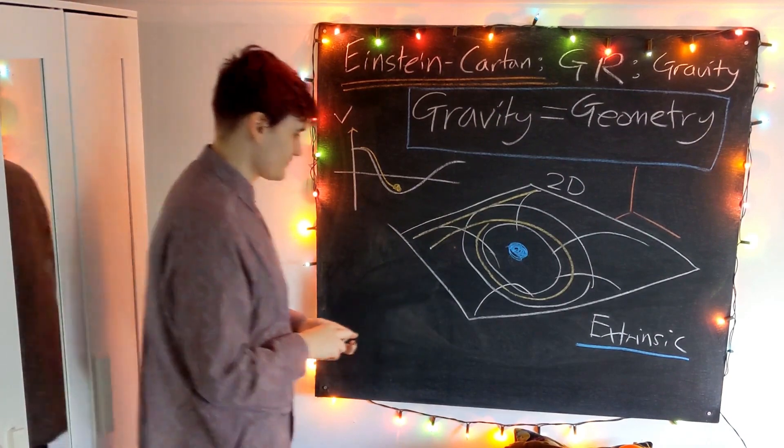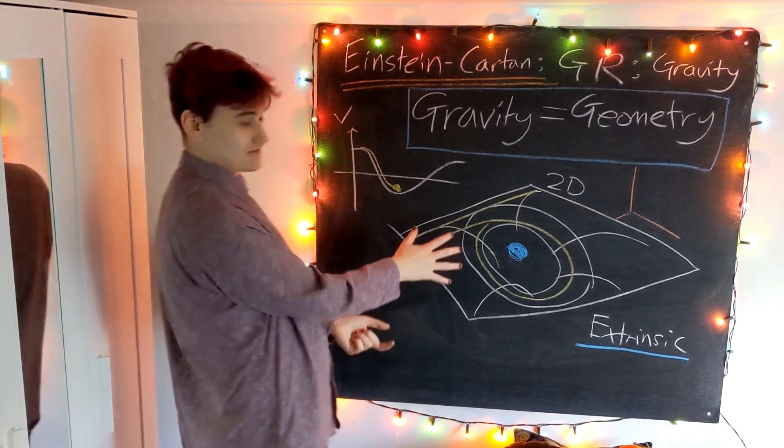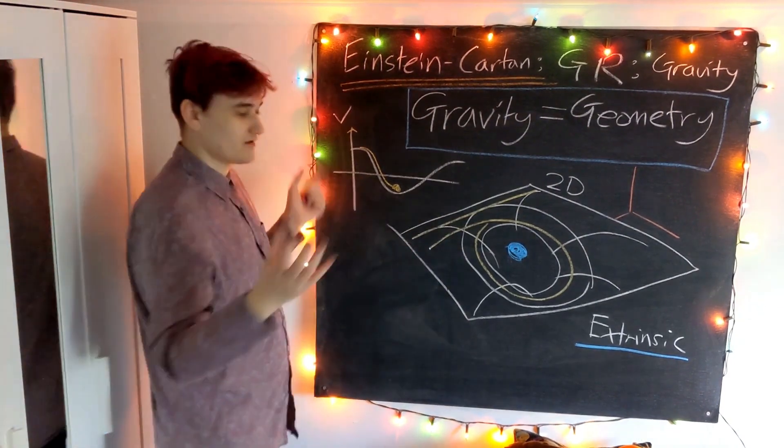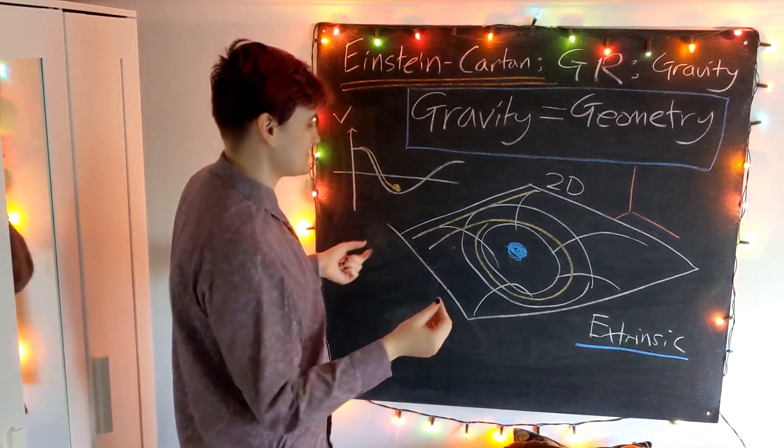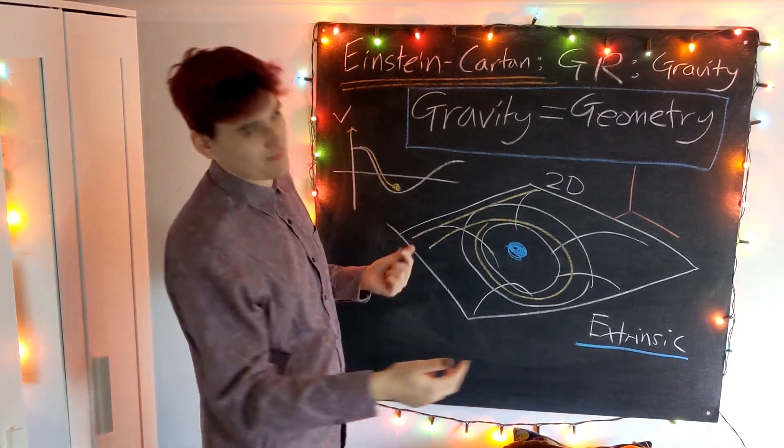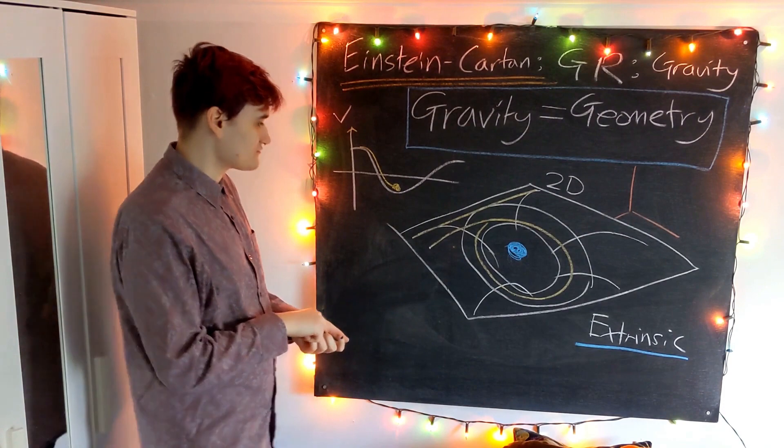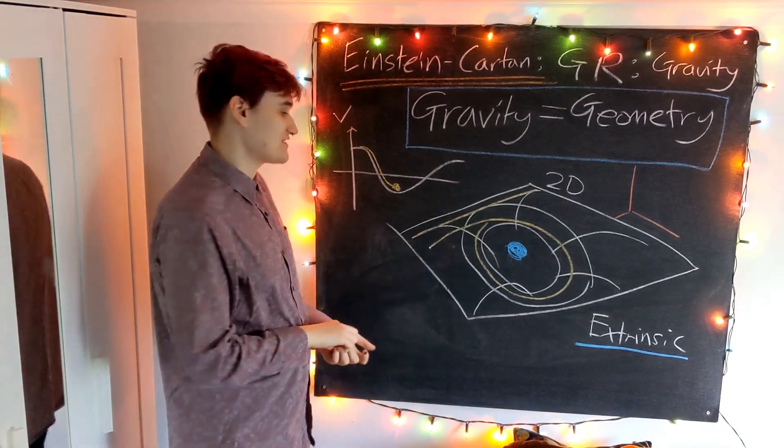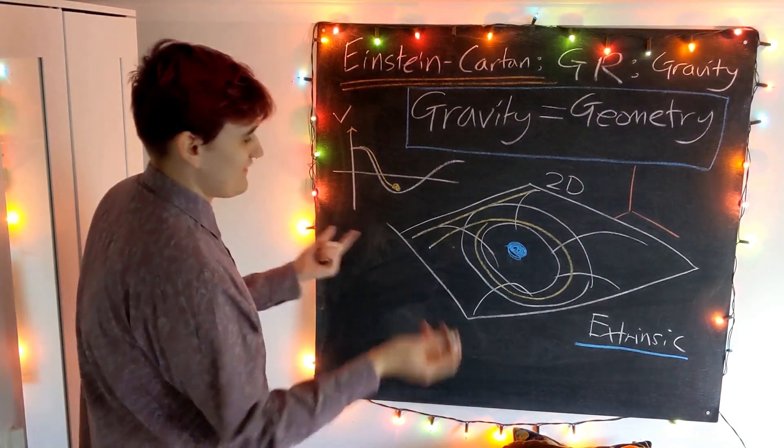To an observer that's confined to the surface, they wouldn't notice any of this curvature at all, because it's just really an artifact of how the space is existing in some higher dimensional space as a whole. To an observer in this spacetime, they just think they're in flat spacetime and they just travel as they would in a flat spacetime.